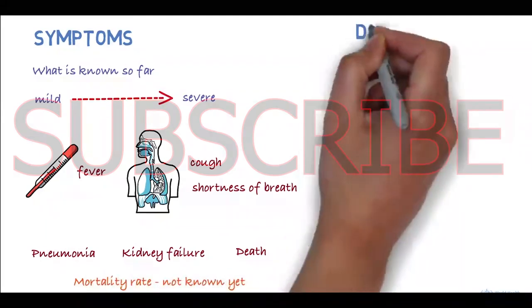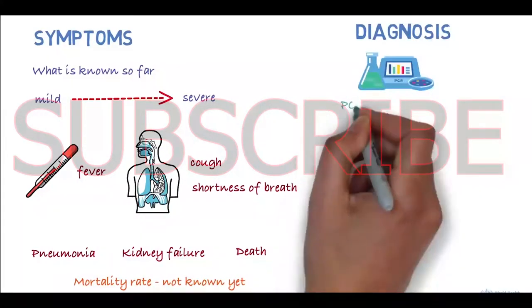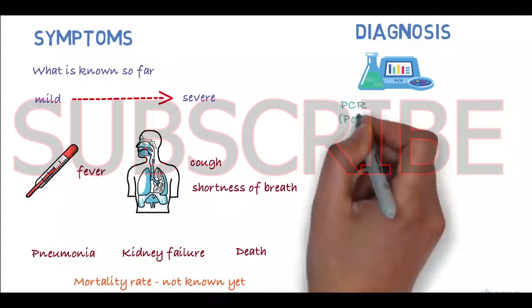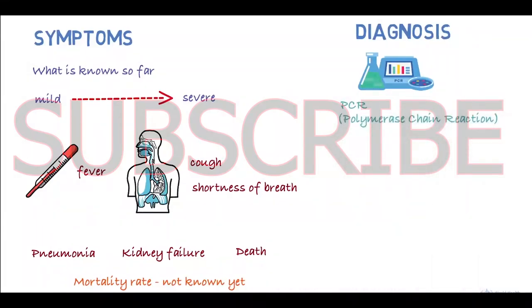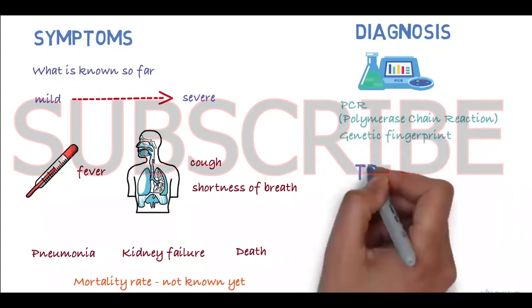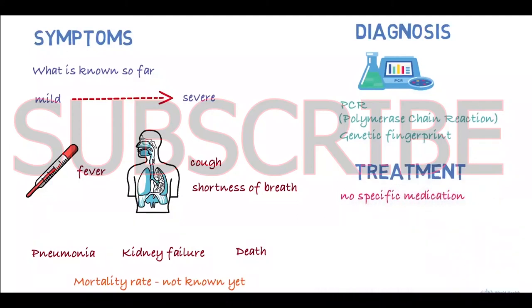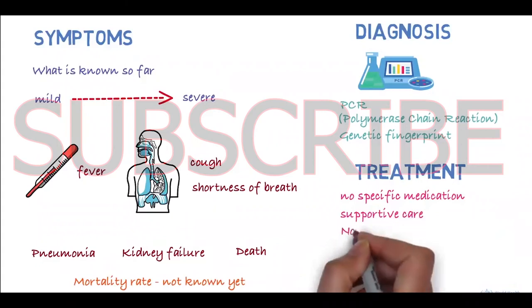How can we tell whether someone is infected? The infection can be diagnosed by a test called PCR or polymerase chain reaction. This test identifies the virus based on its genetic fingerprint. There is currently no specific medication for the virus and treatment is supportive care. There is currently no vaccine to protect against the virus.